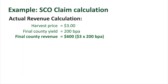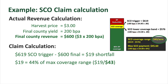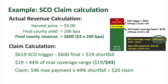Now let's look at a possible harvest time calculation. Let's assume the harvest price dropped to $3 and the final county yield came in at 200 bushels per acre — that would be a final county revenue of $600. They first calculate the county shortfall: we had a $619 county trigger with a $600 final county revenue, that's a $19 shortfall. They take that $19 shortfall into the coverage range of $43. 19 into 43 is 44% of the maximum coverage range. Then they take your maximum payment of $46 times that 44% percent shortfall to issue a $20 claim.